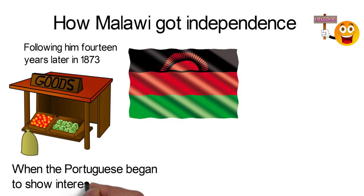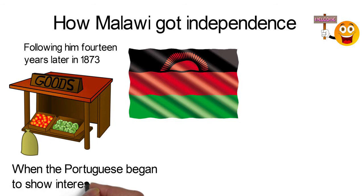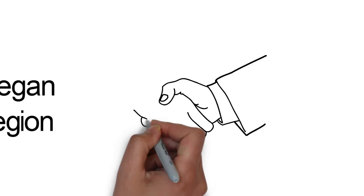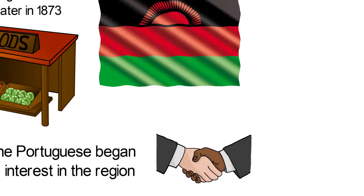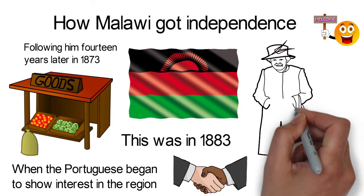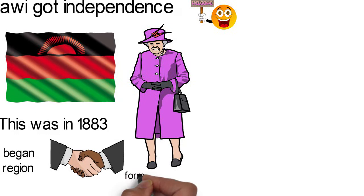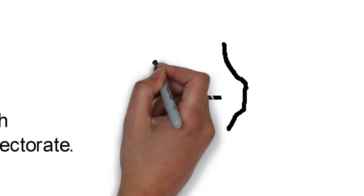When the Portuguese began to show interest in the region, the British government quickly sent Harry Johnston as British consul with instructions to make treaties with local rulers. This was in 1883. Gradually the British took control of Malawi, and by 1891 most of Malawi was already under British control and was formed into the British Central African Protectorate. The first commissioner was Harry Johnston.